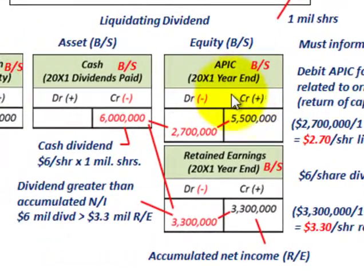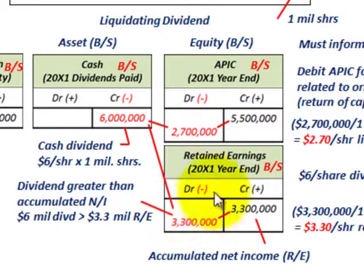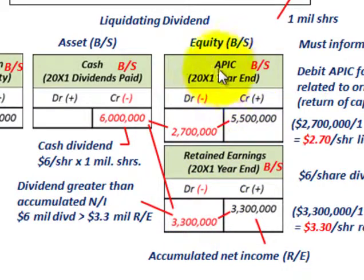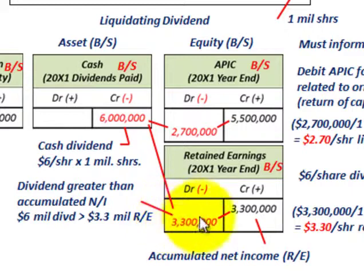In summary, we were dealing with a mining operation with one asset that would not continue, and investors wanted their money back. The accounting requires first debiting retained earnings for whatever is in that account. Since the dividend was greater than the accumulated net income — the retained earnings — the remaining balance reduces additional paid-in capital by debiting it. So the $6 million credit to cash is split: retained earnings are closed out first, and the remaining amount goes against additional paid-in capital. That is what we call a liquidating dividend.